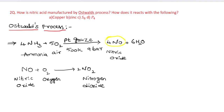In the second step, nitric oxide undergoes oxidation. Nitric oxide reacts with oxygen to form nitrogen dioxide. So in step two, nitrogen dioxide is formed.